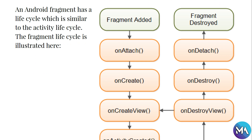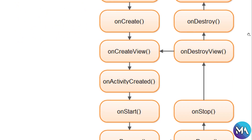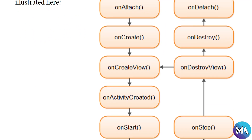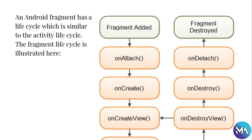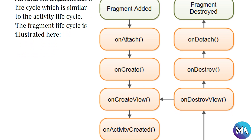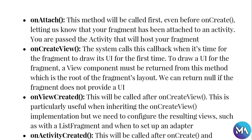An Android fragment has a lifecycle which is similar to the activity lifecycle. The fragment lifecycle is illustrated here: fragment added → onAttach → onCreate → onCreateView → onActivityCreated → onStart → onResume → onPause → onStop → onDestroyView → onDestroy → onDetach → fragment destroyed. It is very important to understand this concept and know which method is the correct place to put your code.